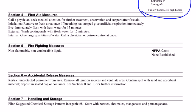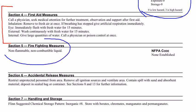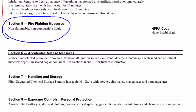Much like the hazard section, you also need to pay close attention to the first aid section — what to do if you accidentally inhale the vapors, or if liquids get behind your goggles. You also need to notice Section 5, which is the fire measures. This is a non-flammable, non-combustible liquid, so we're probably not going to be dealing with fire measures, but it's always nice to read that section to be sure.